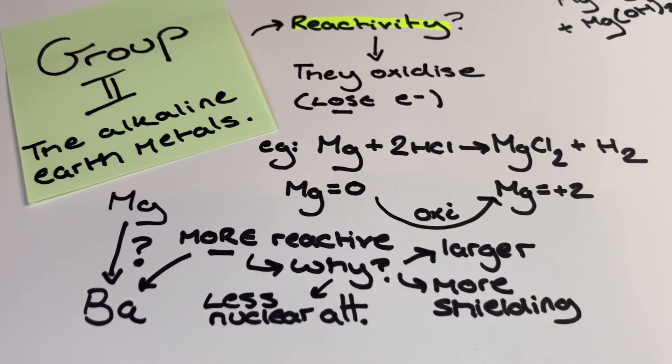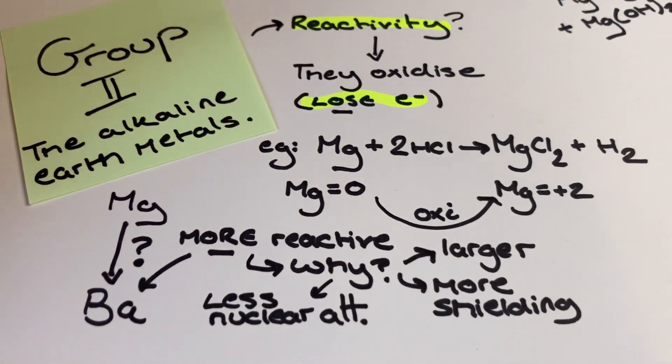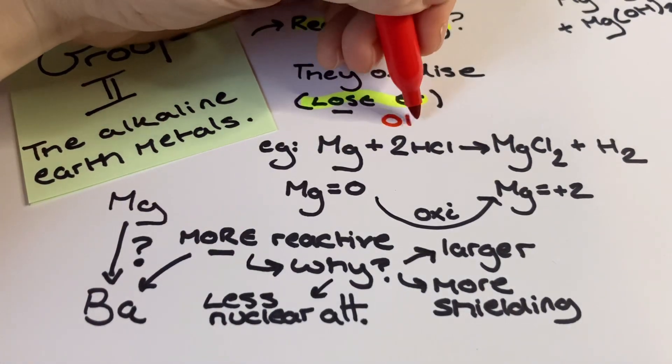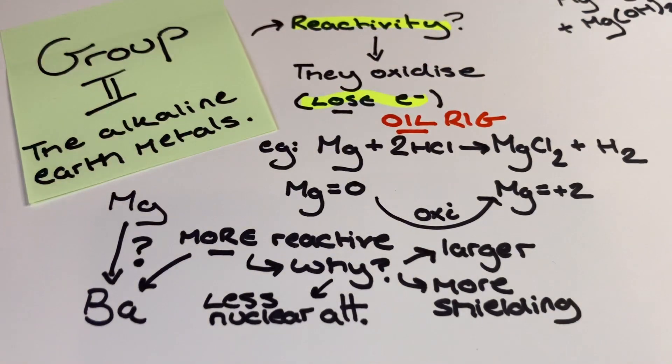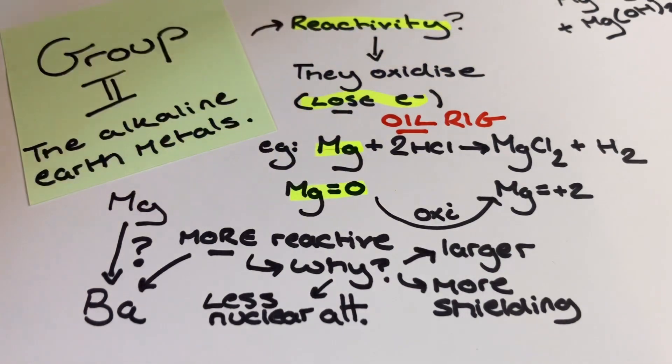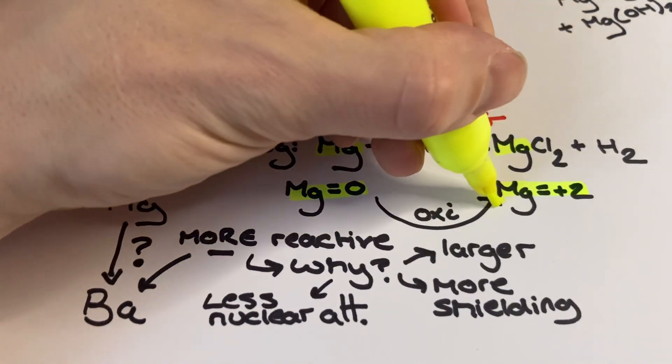We're going to start by looking at the reactivity of our group 2 metals. To consider their reactivity we need to consider their outermost or valence electrons. The group 2 metals have their electron configuration ending in S2, which means they have two valence electrons. When they react, the group 2 metals get oxidized and we see these two valence electrons get donated. We can see this here in the equation of magnesium reacting with hydrochloric acid to form magnesium chloride and hydrogen gas.